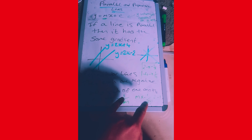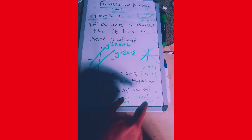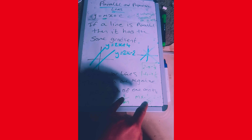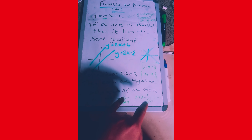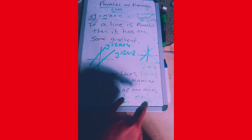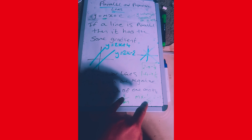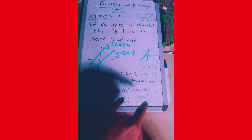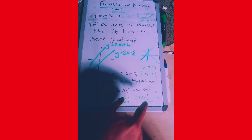Perpendicular lines have a point of intersection — a specific point where the two lines meet. For parallel lines, the lines will never meet. In the exam, a valid justification for why two lines are perpendicular is that their gradients are negative reciprocals of one another, or that the product of their gradients equals negative one.